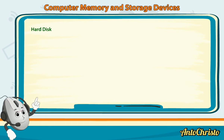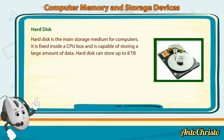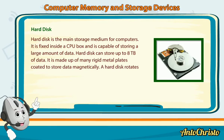Hard Disk: A hard disk is the main storage medium for computers. It is fixed inside a CPU box and is capable of storing a large amount of data — up to 8 TB. It is made up of many rigid metal plates coated to store data magnetically. A hard disk rotates while it is being recorded.